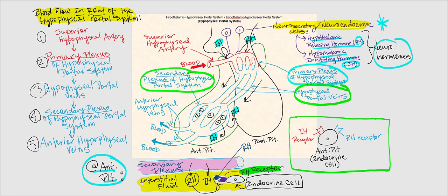A hypothalamic releasing hormone stimulates the endocrine cells of the anterior pituitary to secrete hormones — let's call it hormone A. RH binds to its RH receptor present on the endocrine cell of the anterior pituitary, and hormone A is secreted. Hormone A enters the secondary plexus — it is now in blood. This is why A is a hormone: it enters blood and does not stay in the interstitial fluid. So from the interstitial fluid, the endocrine cell secretes hormone A, which now enters blood and is officially a hormone.